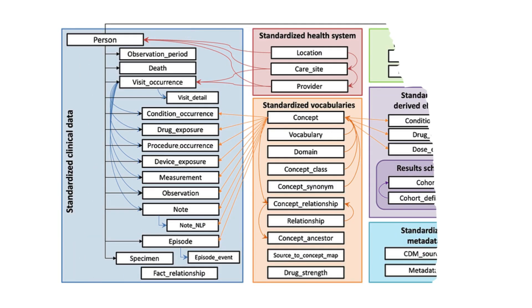So how does OMOP CDM actually work? OMOP CDM is a relational database model, meaning it's structured in tables that contain different aspects of healthcare. These tables are grouped into sections such as clinical data, health systems, and health economics. This standardized structure allows researchers to work with a consistent format, no matter the original data source.